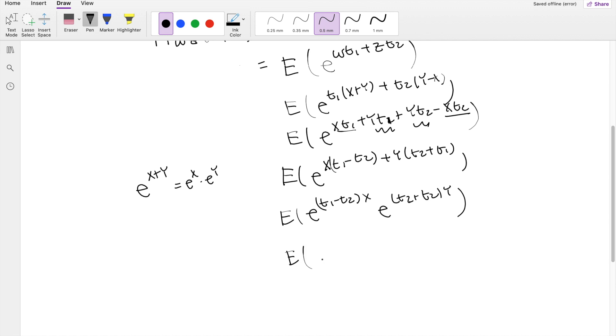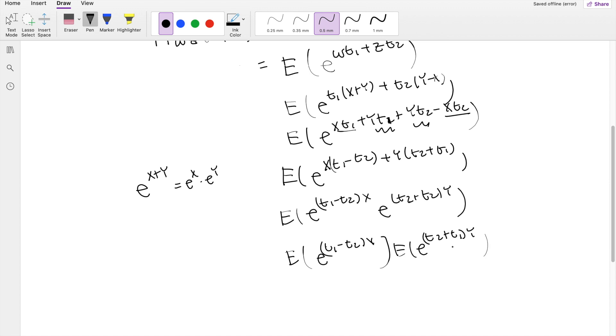Again, by independency, we can actually split this up again. Expected value of E to the (T1 minus T2)X, times expected value of E to the (T2 plus T1)Y.